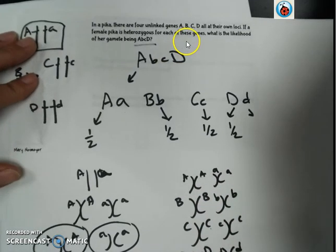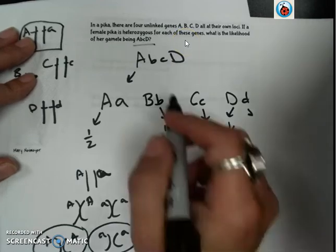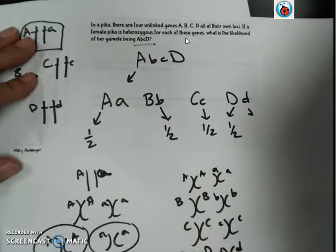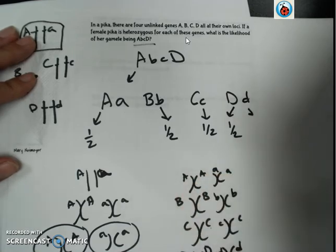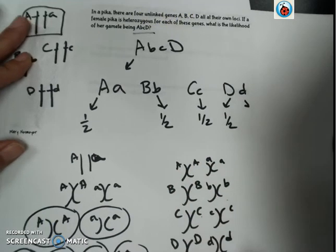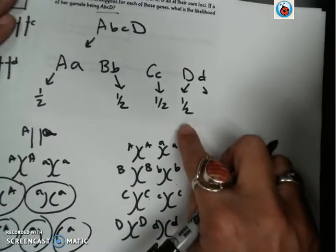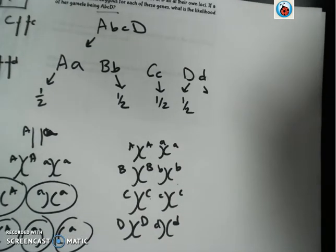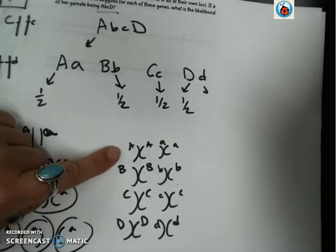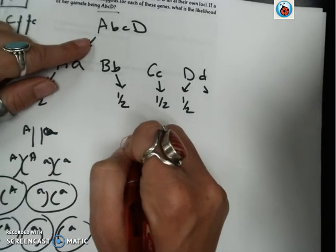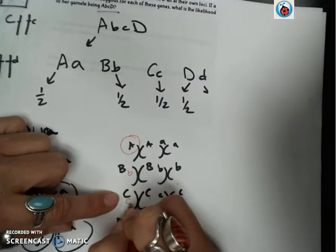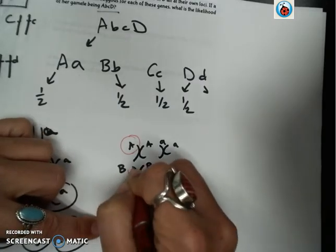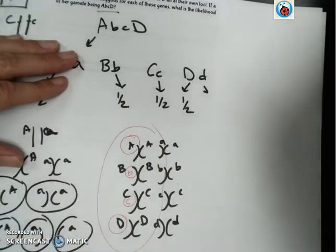Because the question says that they are unlinked genes, I know that they are on separate chromosomes. And therefore we are wondering how many different possibilities are there. And what is the likelihood that when they line up along the middle, what is the likelihood that the dominant A, a recessive B, a recessive C, and a dominant D, will all end up on one side?